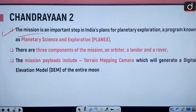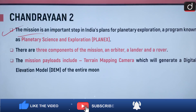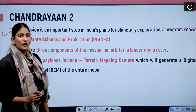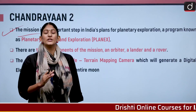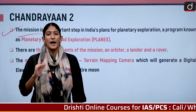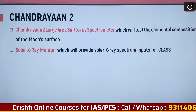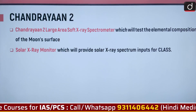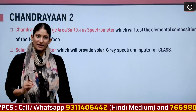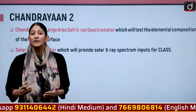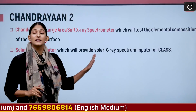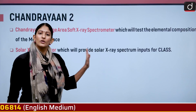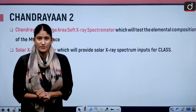The mission payloads include a terrain mapping camera, which will generate a digital elevation model of the entire moon. The orbiter has already mapped about 95% of the surface. The Chandrayaan 2 large area soft X-ray spectrometer will test the elemental composition of the moon's surface — what elements are present beyond water. Additionally, the solar X-ray monitor will study microwave classification as well as solar flares of the sun.